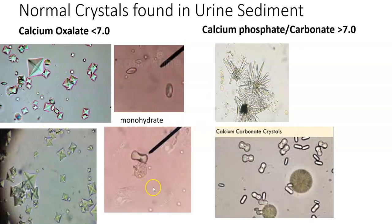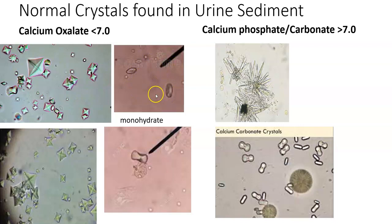The dihydrate form of calcium oxalate has the classic square-with-X appearance, while the monohydrate form tends to look dumbbell-shaped, but can also appear as a really weird ovoid or discoid shape. We would not typically know what the monohydrate forms are just by looking at them — you'd search everything else in the sample to figure it out. Hopefully you'll find at least one tiny little X somewhere, and that happens quite often.